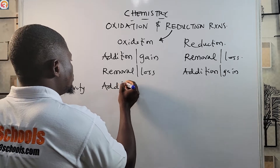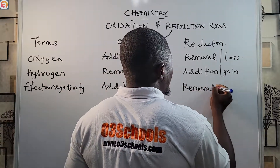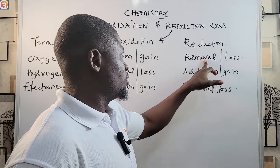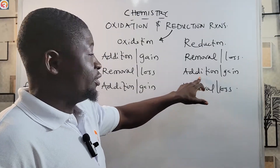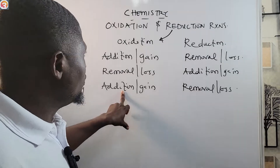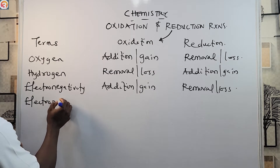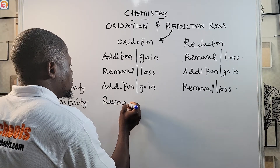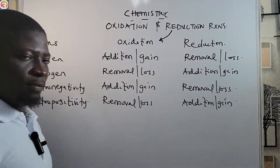In terms of electronegativity: oxidation is the addition or gain of electronegativity, while reduction is the removal or loss of electronegativity. In terms of electropositivity: oxidation is the removal or loss of electropositivity, while reduction is the addition or gain of electropositivity.